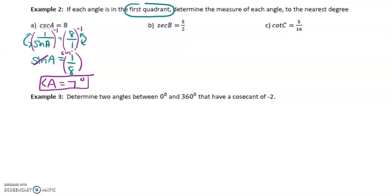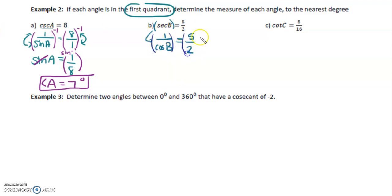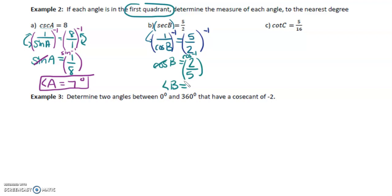For the second one, secant b equals five over two. Again, we can't put secant into our calculators, so we have to present this differently. We rewrite secant b as one over cos of b — these are equivalent, so the right side stays five over two. Raising both sides to the negative one, we get cos b equals two over five. Taking cos inverse, angle b equals cos inverse of two over five, which gives us 66 degrees.